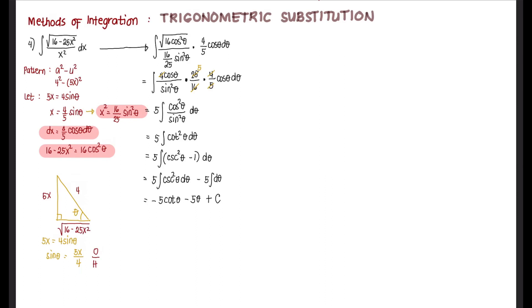Now we solve for cotangent. Cotangent theta is adjacent over opposite. The adjacent side is the square root of 16 minus 25x squared and the opposite side is 5x.